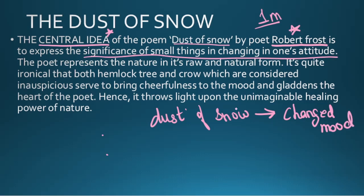The central idea is about how small things can make us feel different and change our attitude. In the poem 'Dust of Snow,' it is not symbolizing something very complex, but it changed the mood of the poet. The poet tries to make us understand that little things in our life — things we do not even focus on — can actually change our attitude. The poet represents nature in its raw and natural form: he is not saying there are beautiful flowers or birds singing beautifully around him; he is presenting nature as it is.